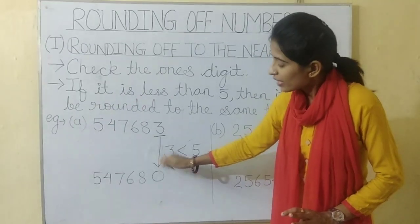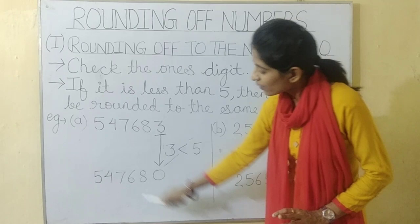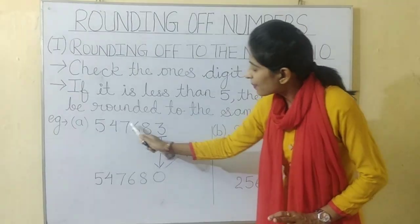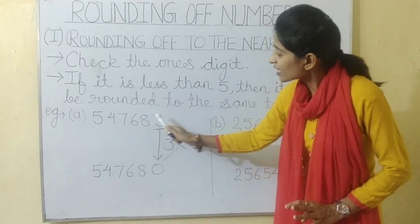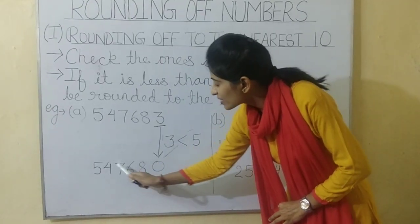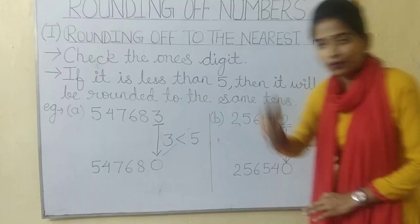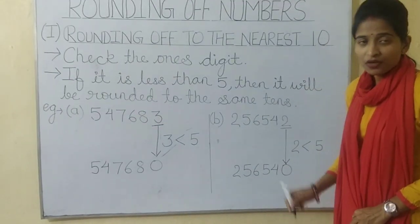So the answer will be 547680. The ones digit becomes 0 and the tens digit stays the same.